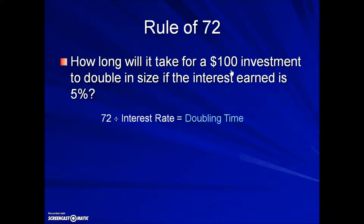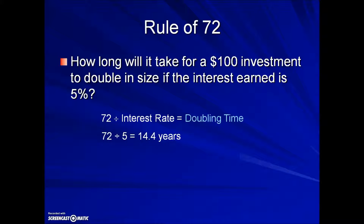We're just calculating the time for that amount — whatever it happens to be — to double. To do that we take 72 divided by the interest rate; that's the factor that calculates the amount of time for doubling. So in the formula we'll put a 5 in place of interest rate, take 72 divided by 5, and in this case we could expect the initial deposit to double in value in 14.4 years.